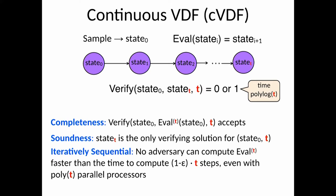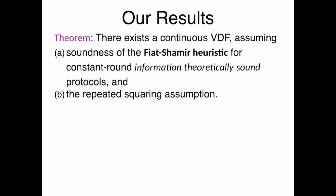So that's the almost formal definition of a continuous VDF, and as plain VDFs we'll also allow to use public parameters. So our result is the construction of a continuous VDF that relies on the Fiat-Shamir heuristic for constant round proof systems and the repeated squaring assumption. We can also work in any group of unknown order actually.